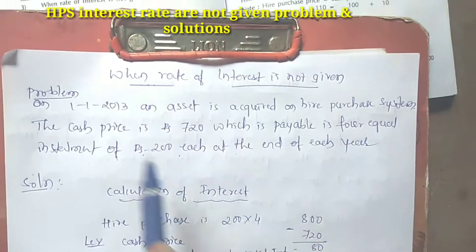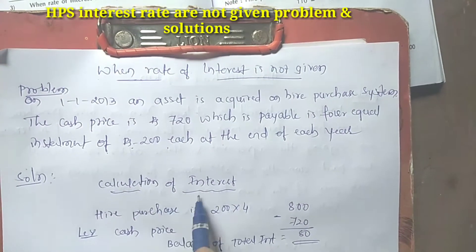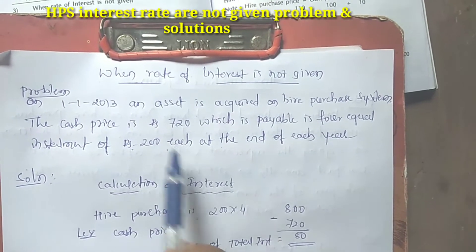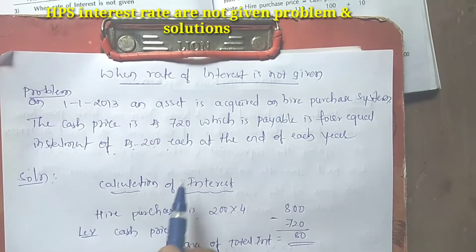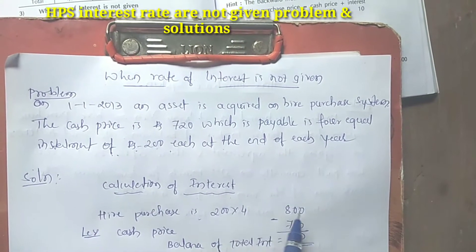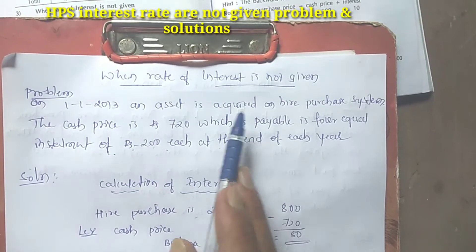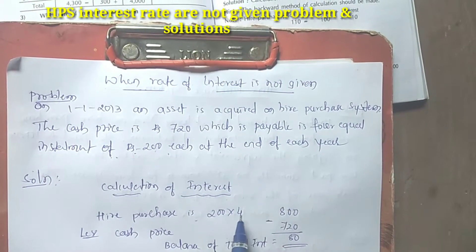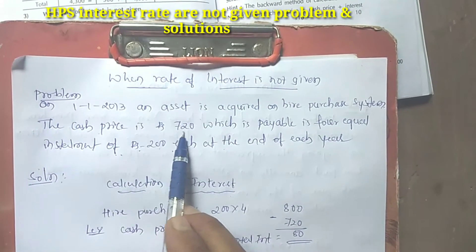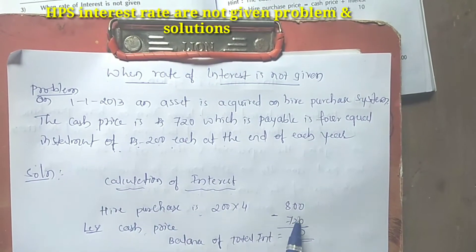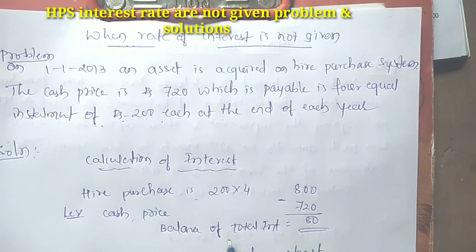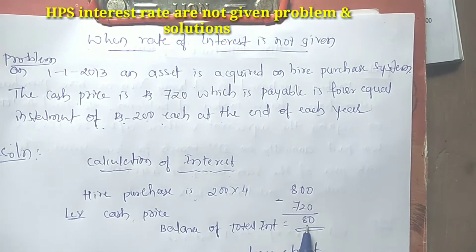First, calculation of interest: the higher purchase price is 4 installments of rupees 200, so the total hire purchase price is rupees 800. The cash price is rupees 720, so the total interest is rupees 800 minus 720, which equals rupees 80.